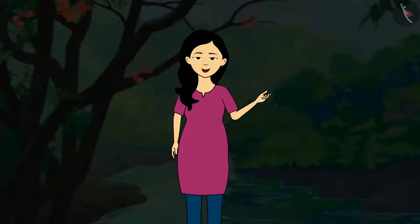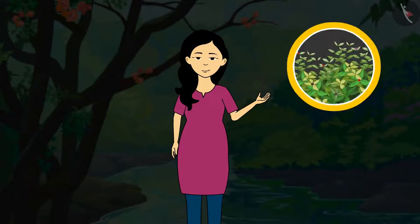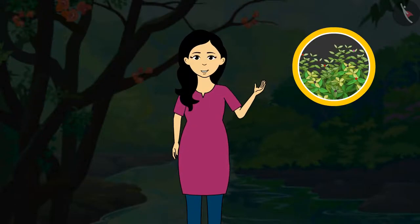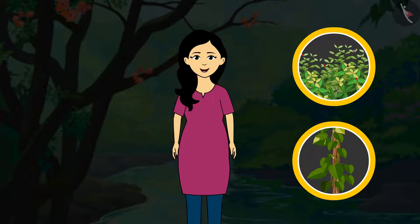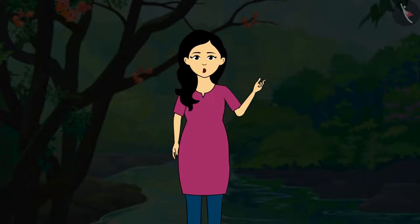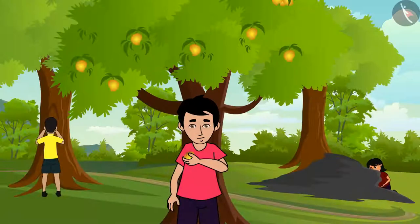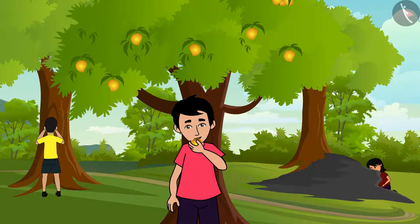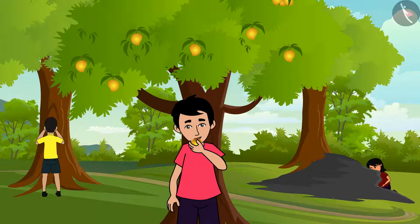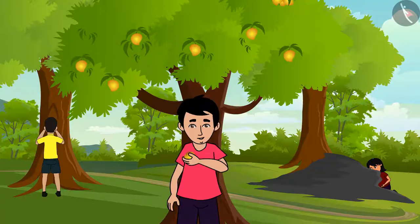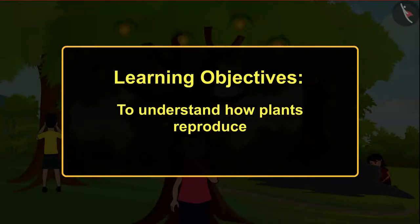You have studied about the various parts of the plant in the previous year. The flower is the reproductive part of the plant. But the plants which do not have flowers — how do they reproduce? Come, let us learn with the help of this video about this. Learning Objective: To understand how plants reproduce.